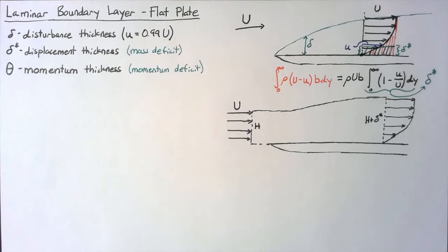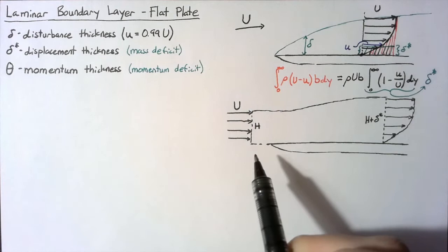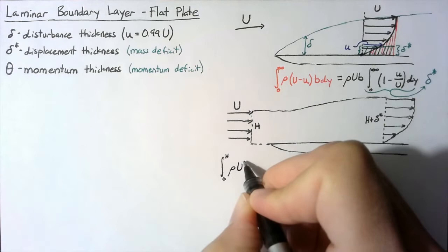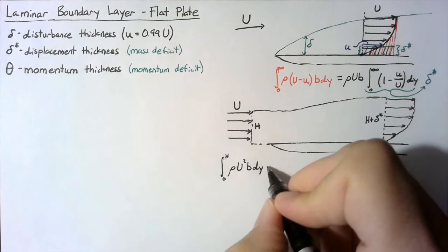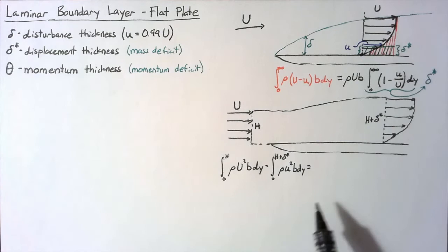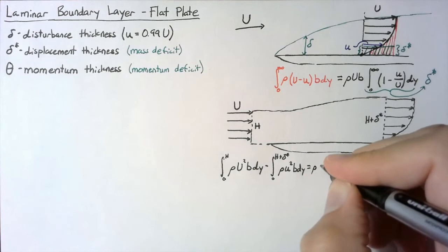So doing all this, our momentum deficit is just going to be the amount of momentum coming in minus the amount of momentum leaving. The momentum coming in is going to be the integral from 0 to h of rho U² multiplied by b dy. The momentum leaving is going to be the integral from 0 to h plus delta star of rho times the local velocity squared multiplied by b dy. So we're going to do the same thing as before and take out all of our constants — rho times capital U² times b.